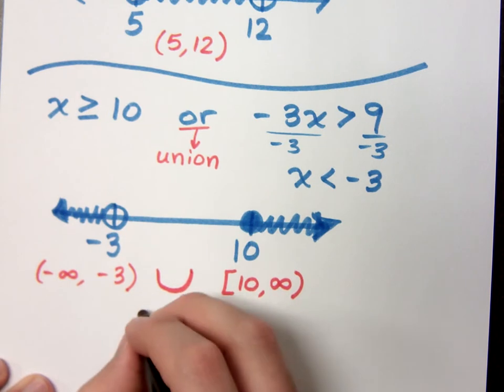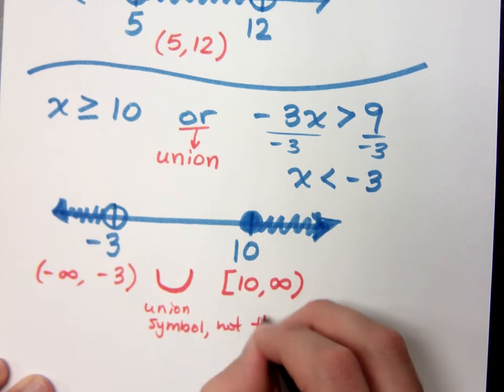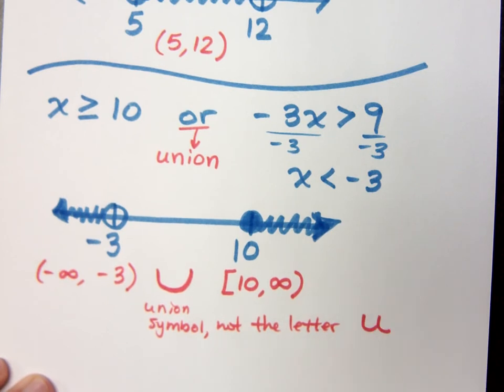Okay? This is our union symbol. Make sure you understand it's a symbol, and it's not the letter U. You put a tail on it, I've got to cut that off, and I've got to charge a couple points. So, you definitely don't want to do that.